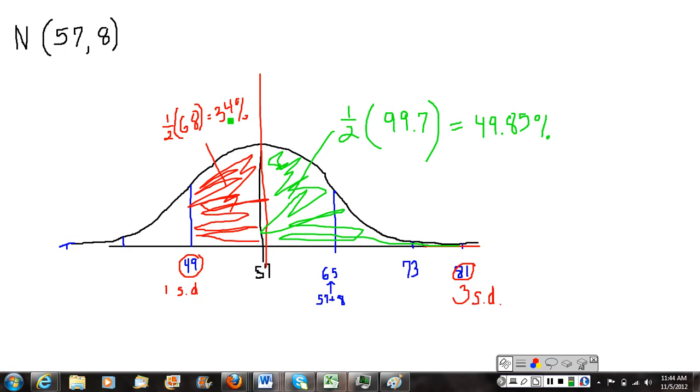So this area in green is 49.85% of the area under the curve. The area in red is 34% of the area under the curve. So to find the total area, my final answer here, I can take that 34 plus the 49.85% to get a final answer, which comes out to be 83.85%. So the shaded area we've shown would be 83.85% of the area under the curve.